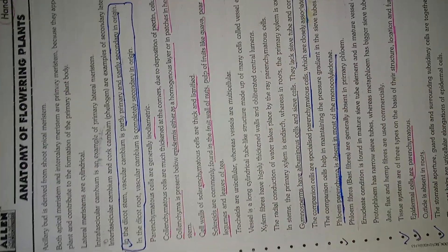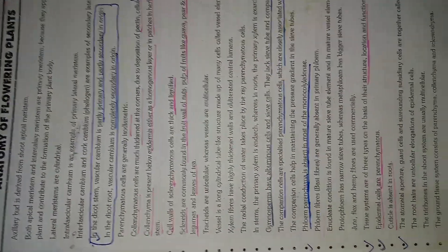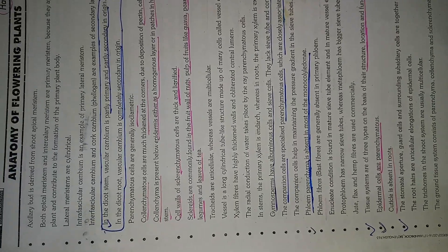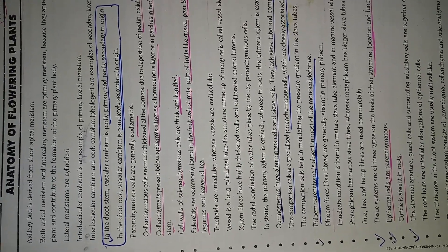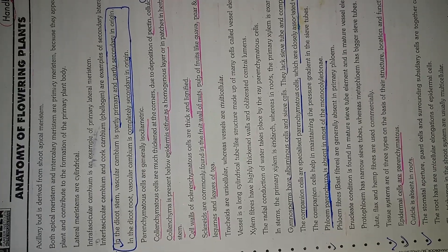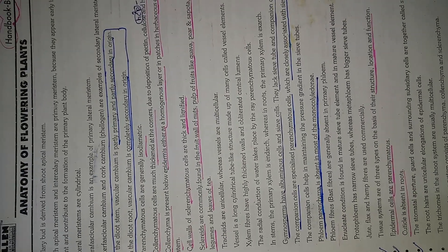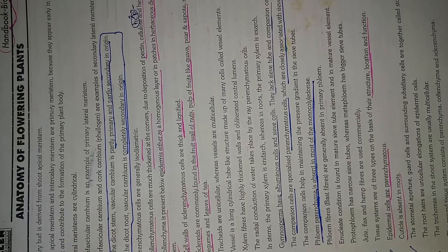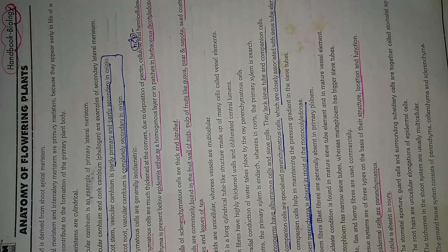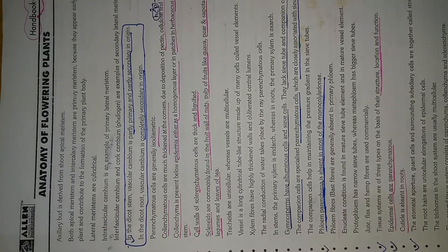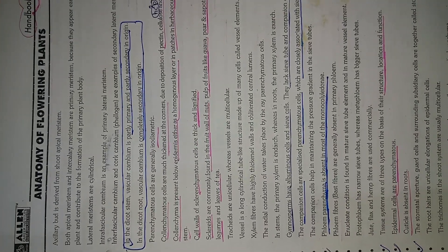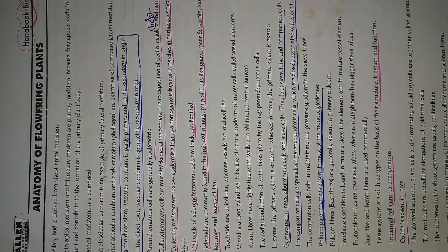Anatomy of the flowering plant is taken line by line. The first line is what is derived from the shoot apical meristems. The second is both apical meristems and the intercalary meristems, also called primary meristems, because they appear early in the life of the plant and contribute to the formation of the primary plant body.